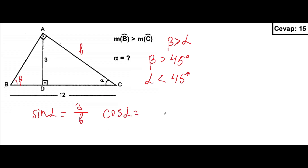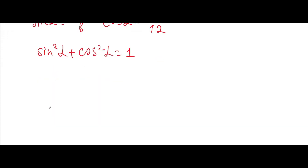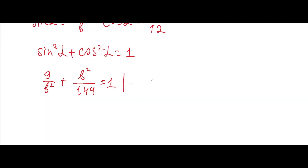We know the formula: sine squared alpha plus cosine squared alpha equals one. We can plug these expressions in and we'll get: 9 over B squared plus B squared over 144 equals one. We can then multiply both sides by B squared times 144.